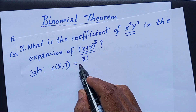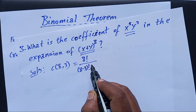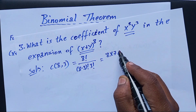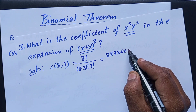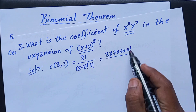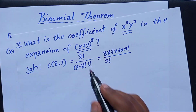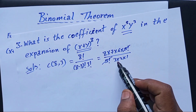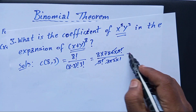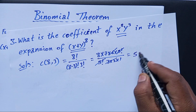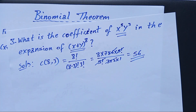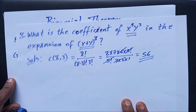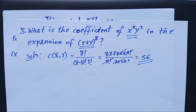Without expanding all 9 terms, we can directly find the coefficient of x^5 y^3 using C(8,3), where 8 is the total exponent and 3 is the exponent of the second variable. C(8,3) = 8! over 5! times 3! = 8 times 7 times 6 over 3 times 2 times 1 = 56. So the coefficient is 56.